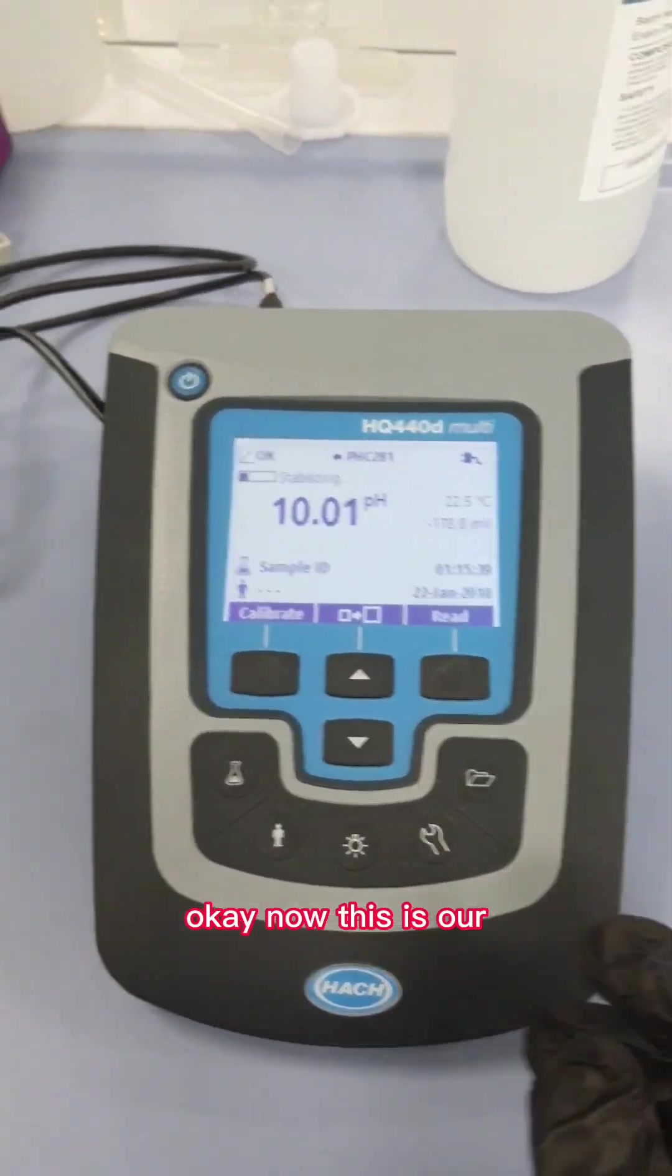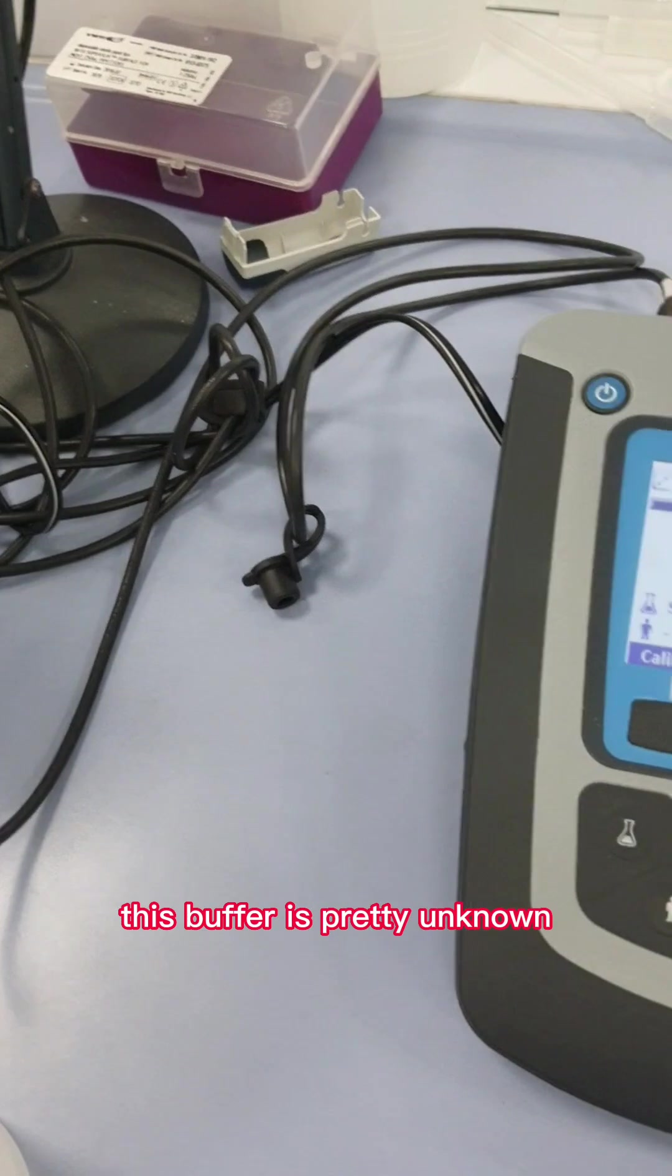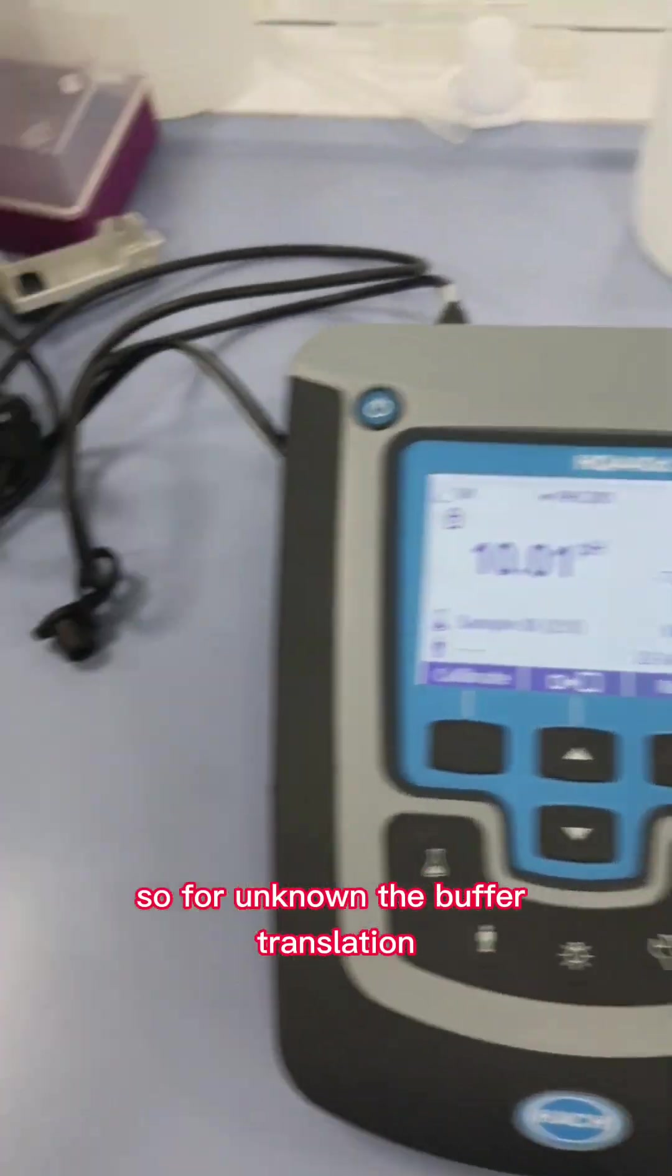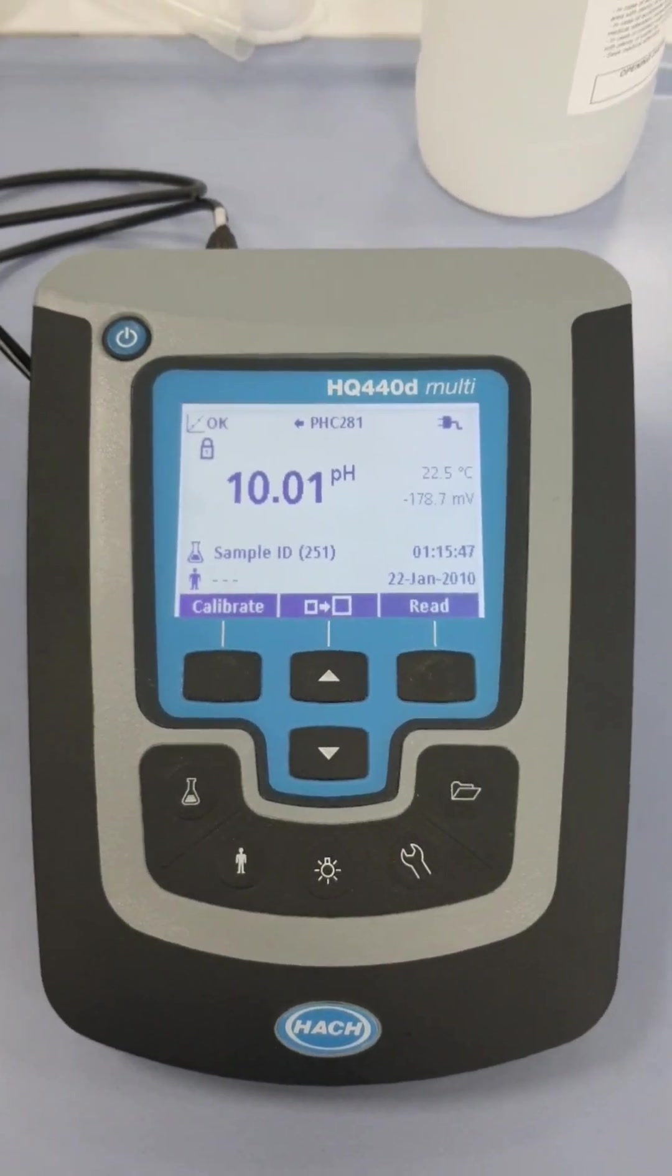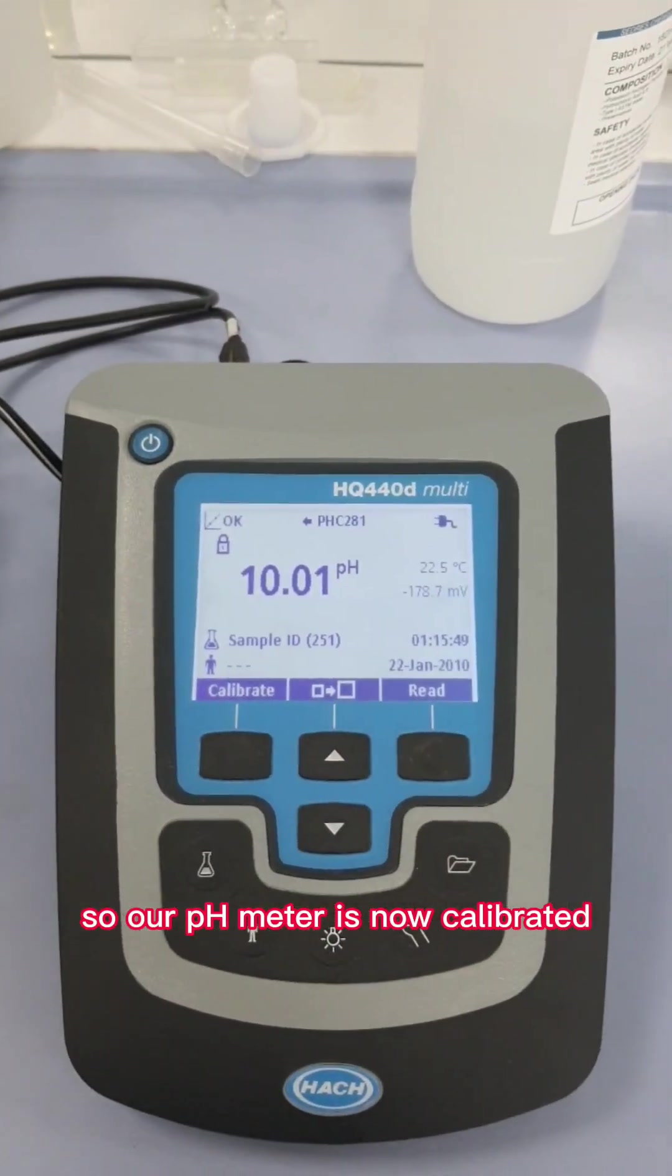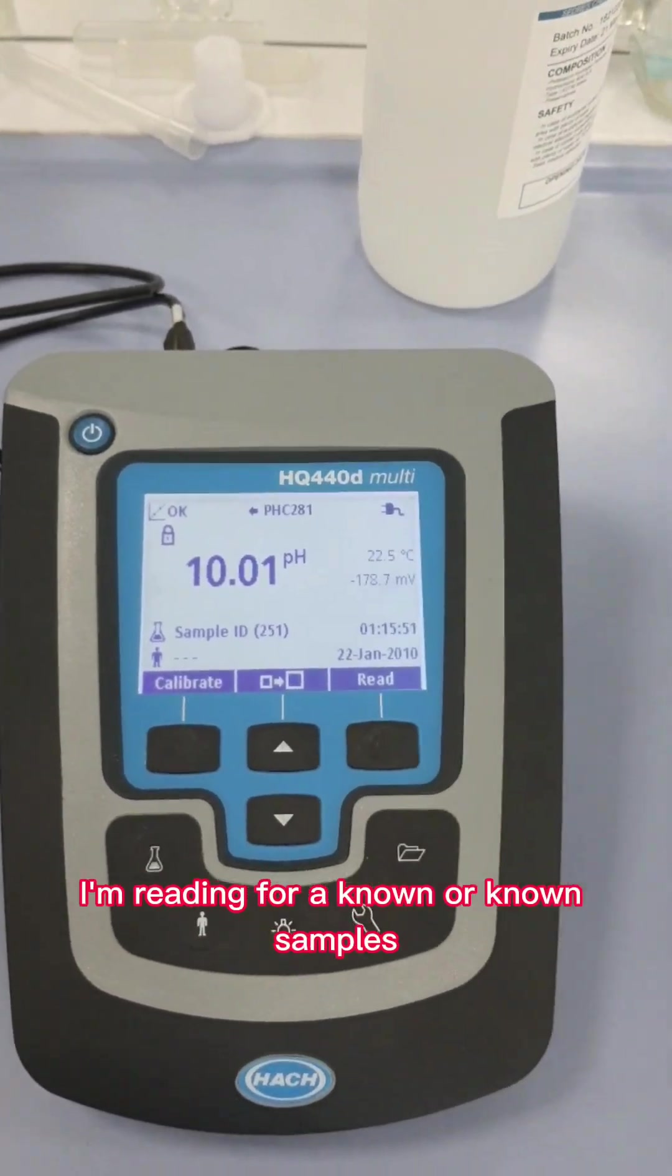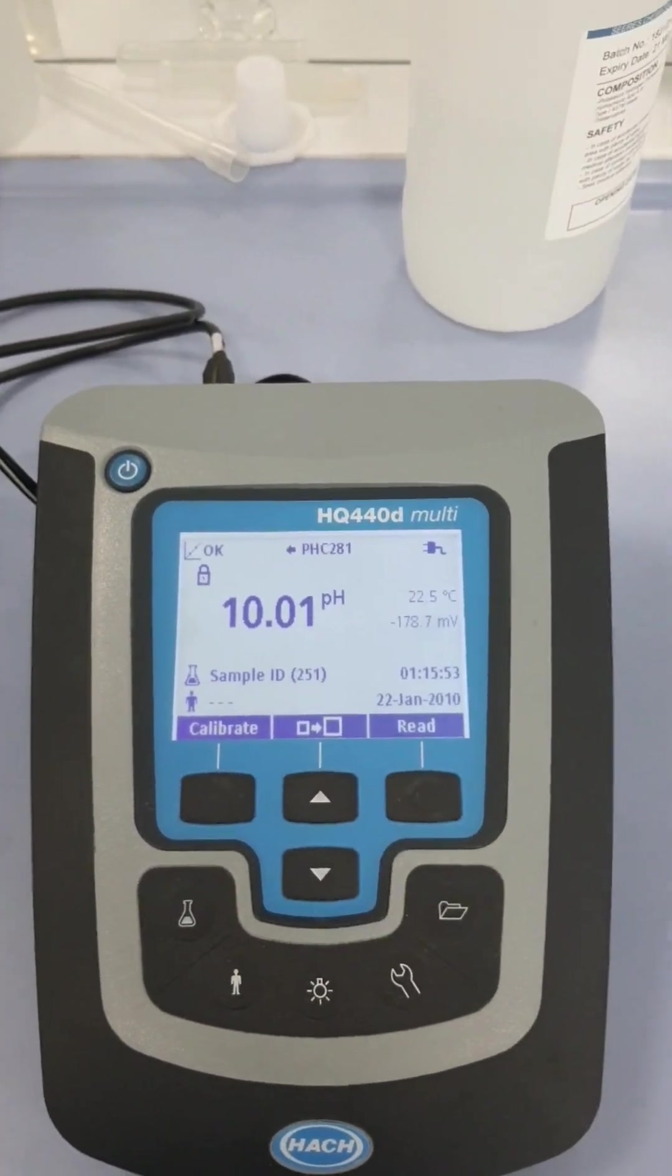Now this buffer is unknown. For the unknown pH 10 solution, it shows pH 10.01, which is right. So our pH meter is now calibrated. Now we can take readings for known or unknown samples.